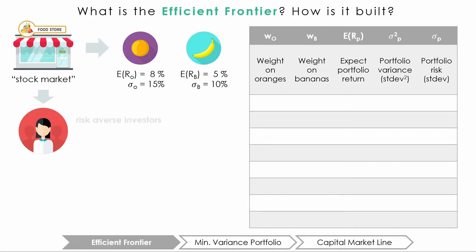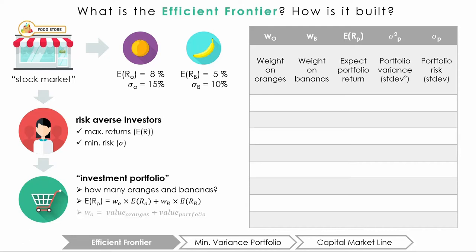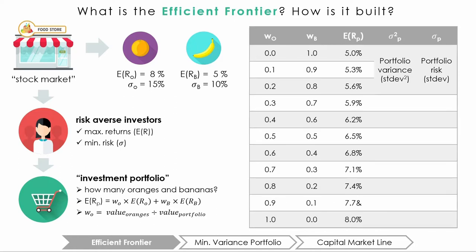Since most investors are risk-averse, we would like to find a portfolio that will maximize our expected returns while minimizing the risk we take on. The combination of oranges and bananas is known as our investment portfolio. The formula for calculating expected return is: expected return of the portfolio equals the weight of oranges times the expected return of oranges, plus the proportion of bananas times the expected return of bananas. The calculated expected returns are as shown below.